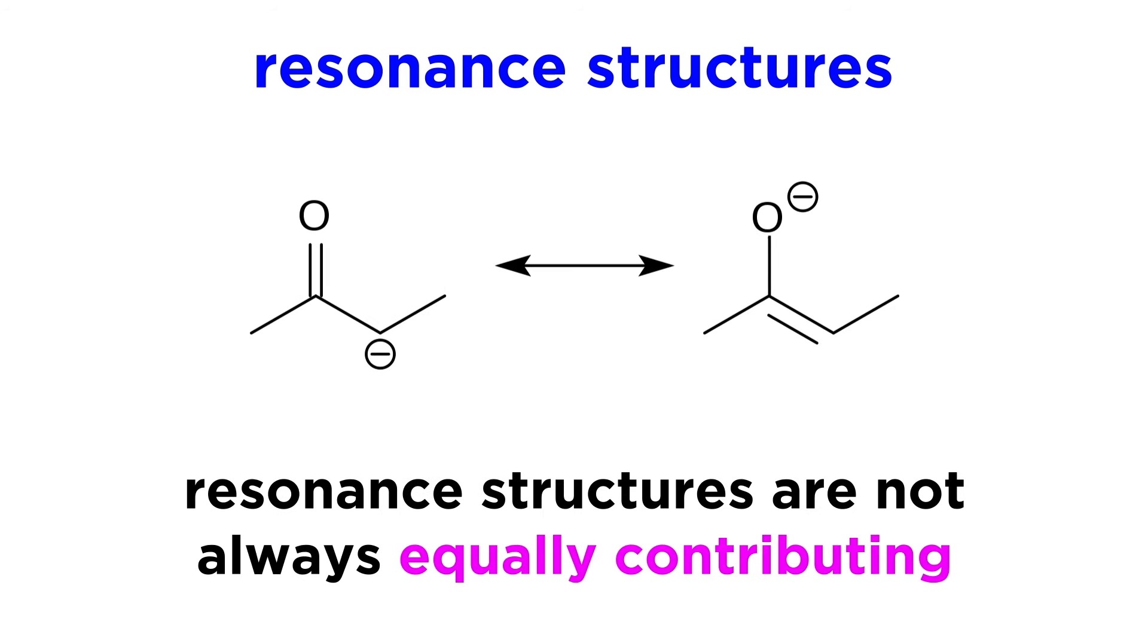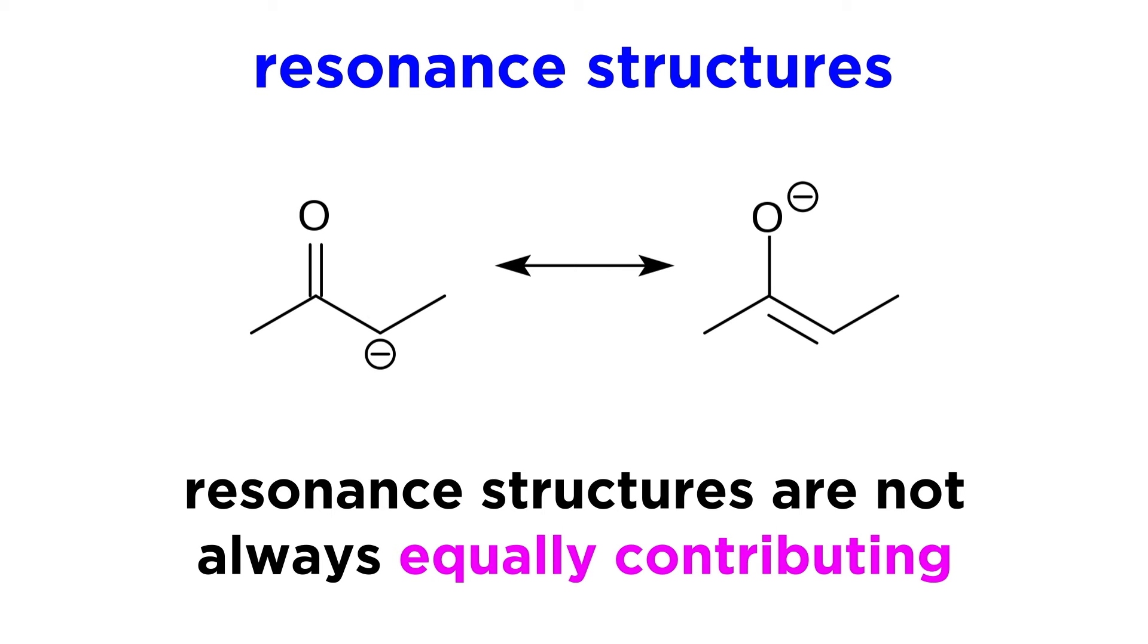Lastly, let's be aware that individual resonance structures do not always contribute equally to the resulting composite resonance structure. More electronegative elements are better at accommodating formal negative charges, because they hold on to the negative charge tightly to stabilize it.